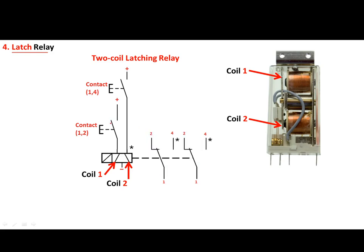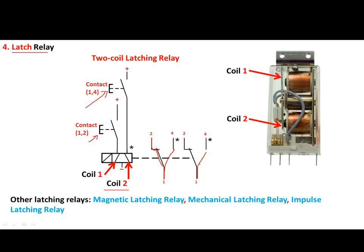For example, if the first button is pressed, energizing coil one, then terminal one will be connected to terminal two. However, if the second button is pressed, energizing coil two, then terminal one will be connected to terminal four. This is what we call a latch relay. Other technologies in this category include magnetic latching relay, mechanical latching relay, and impulse latching relay.